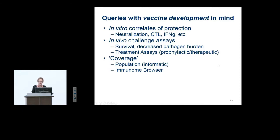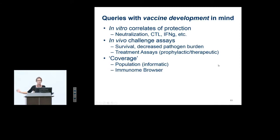The things I always keep in mind when looking into this, especially when doing a meta-analysis — and aside from summarizing the totality of the data for a particular disease in the database — we're also interested in identifying and reporting epitopes that are correlated with protection or correlated with in vitro correlates of protection.